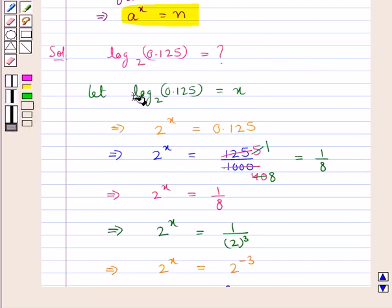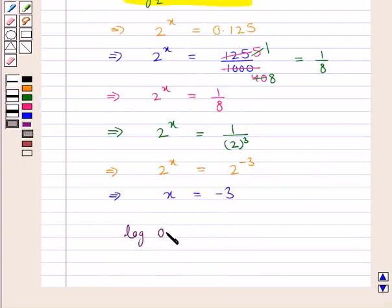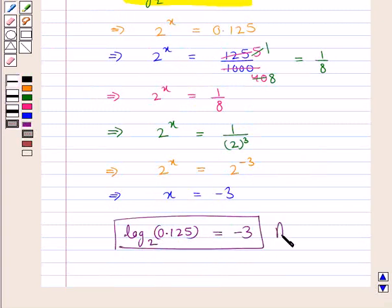We had assumed x to be the logarithm of 0.125 to the base 2. Thus we can say that log of 0.125 to the base 2 is equal to minus 3. This is our final answer.